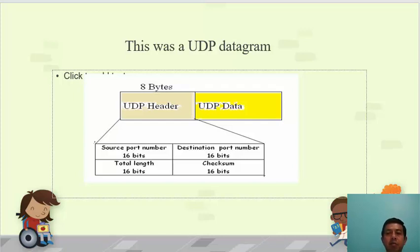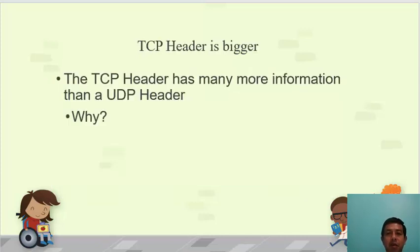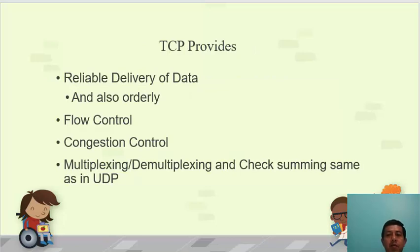TCP does the same thing — it takes data from the application layer, divides it into smaller packets, inserts header information, and delivers those packets to the network layer. However, the header information of TCP is much bigger than that of UDP. TCP provides many more services than UDP, and to support those services it must insert more information in the header.